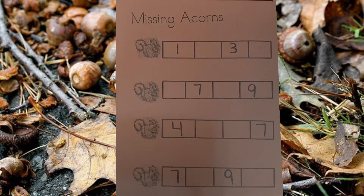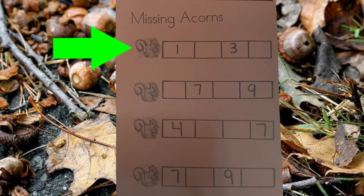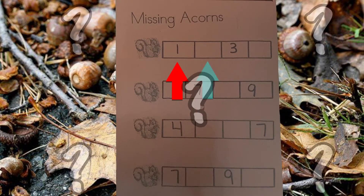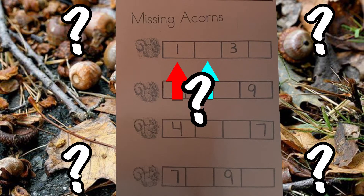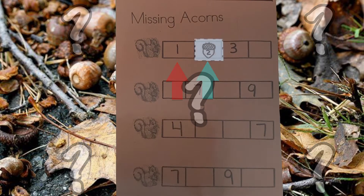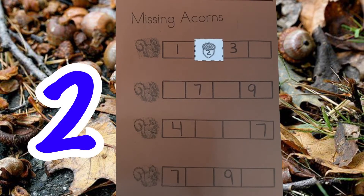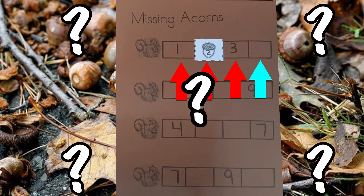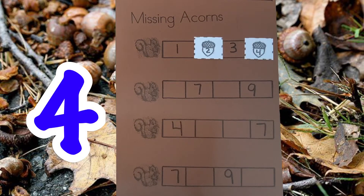Let's have the first squirrel find his acorn. The first number is 1. What comes after 1? It's the number 2. 1, 2, 3. And then what comes after 3? It's the number 4.